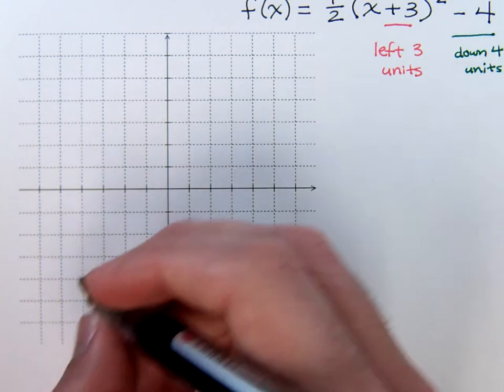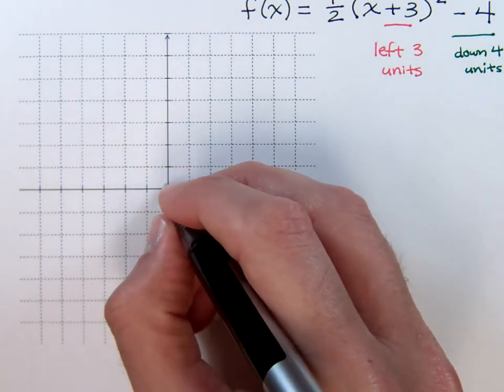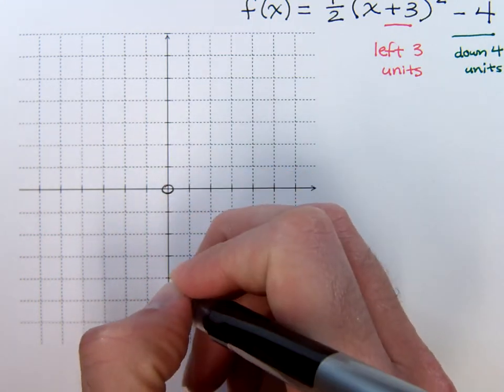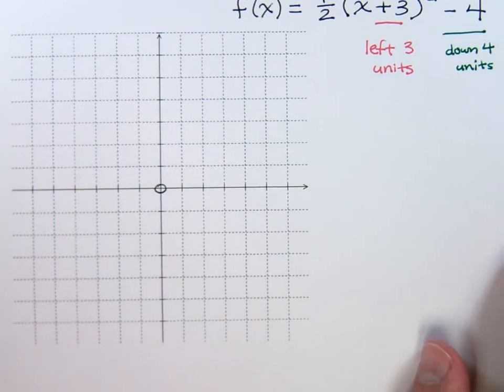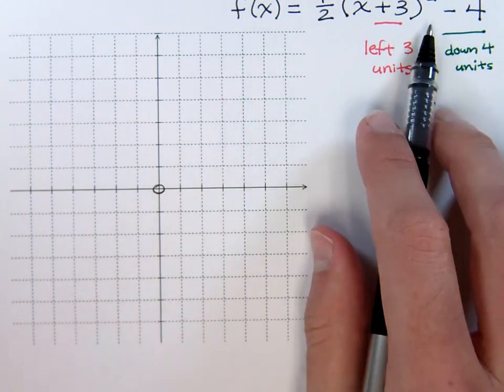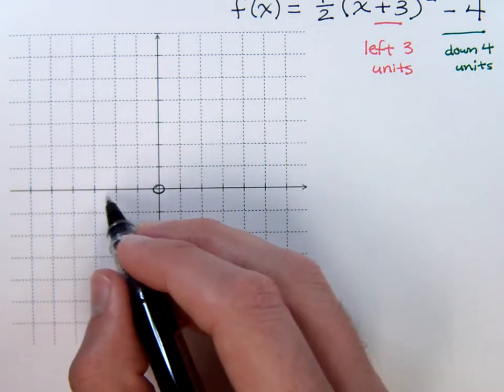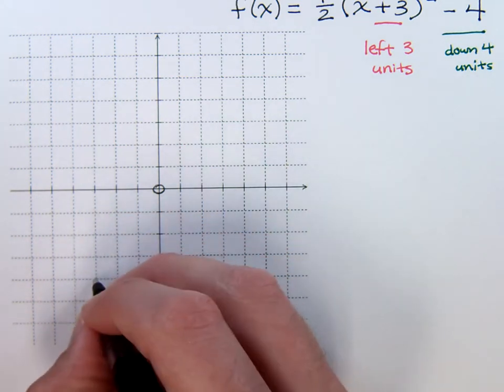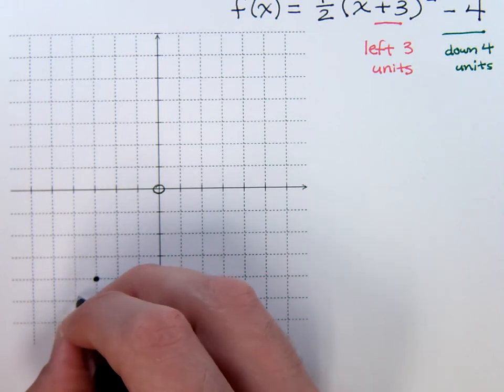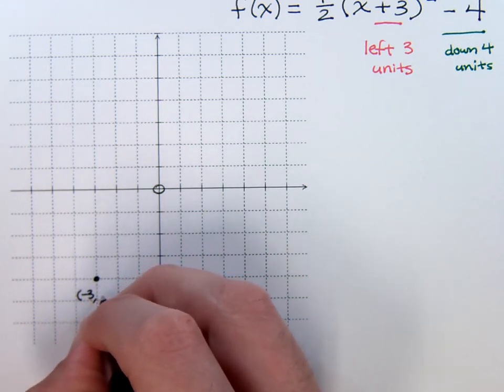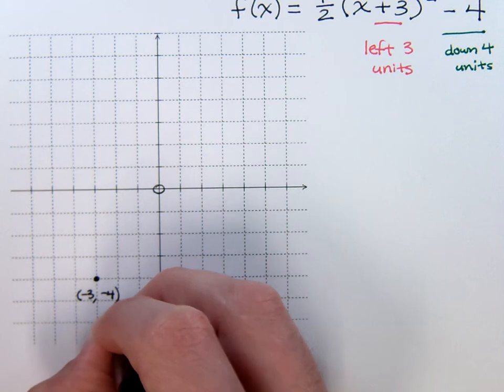Now, our vertex would normally be here at the origin, but according to what I've been able to figure out from this function, I've gone left three and down four units. So, move to the left three and then down four units. Here is your vertex at the coordinates negative three, negative four.